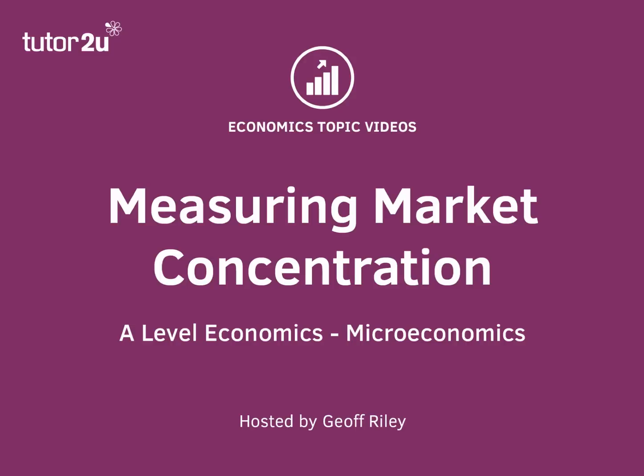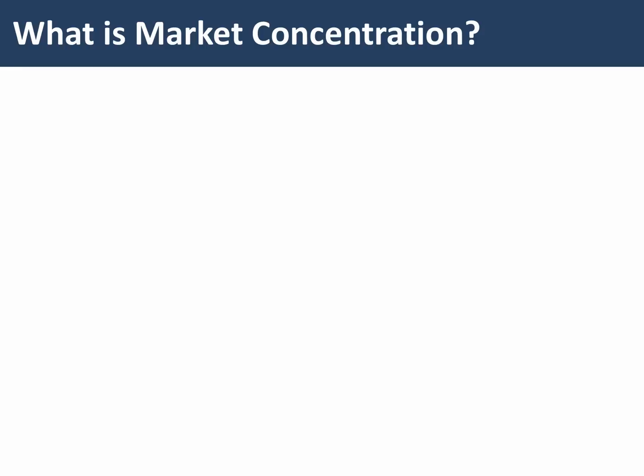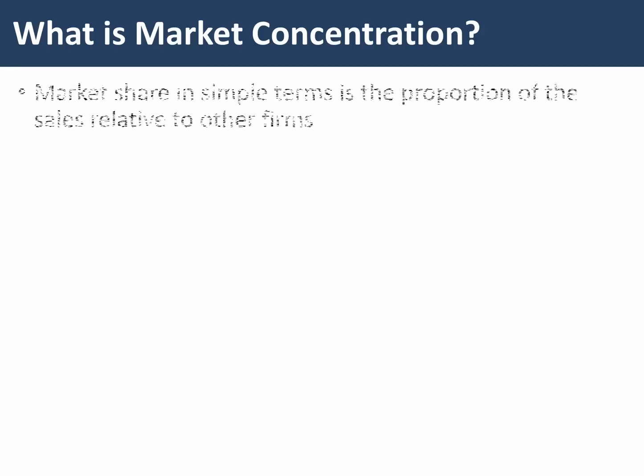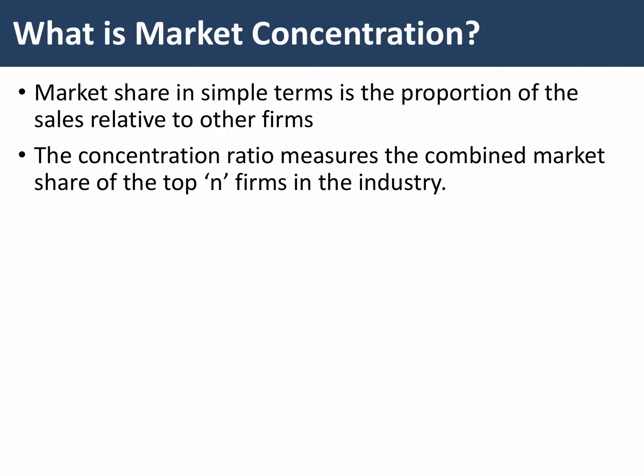Hi there. In this topic video, we're going to focus on how we might go about measuring the degree of market concentration in an industry. Market concentration — the concentration ratio is essentially the market share of firms in the market relative to other firms in the industry. One of the obvious ways of measuring this is to use something called the concentration ratio, which simply measures the combined market share of the leading N firms in the industry.